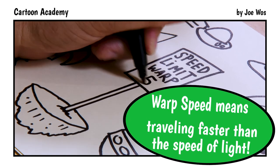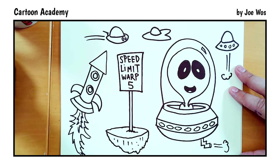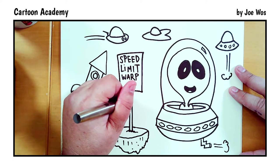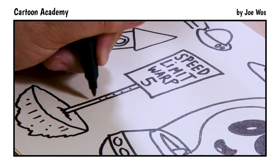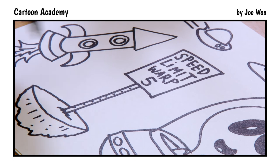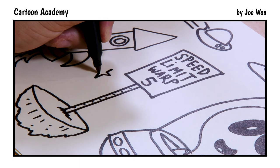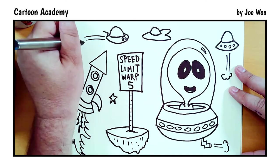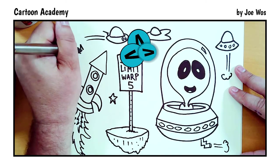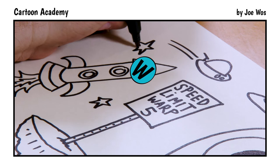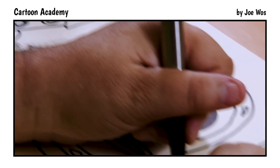And the speed limit is warp, W-A-R-P 5. Warp 5. We have a couple little spots just going down the signpost and maybe one or two stars in the background. Stars are just letter V, letter V, and a W at the base, and you can scatter those throughout.